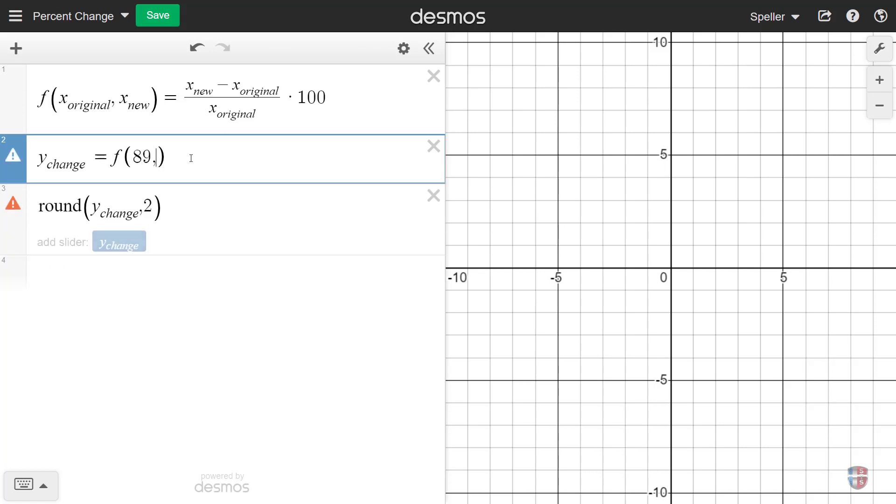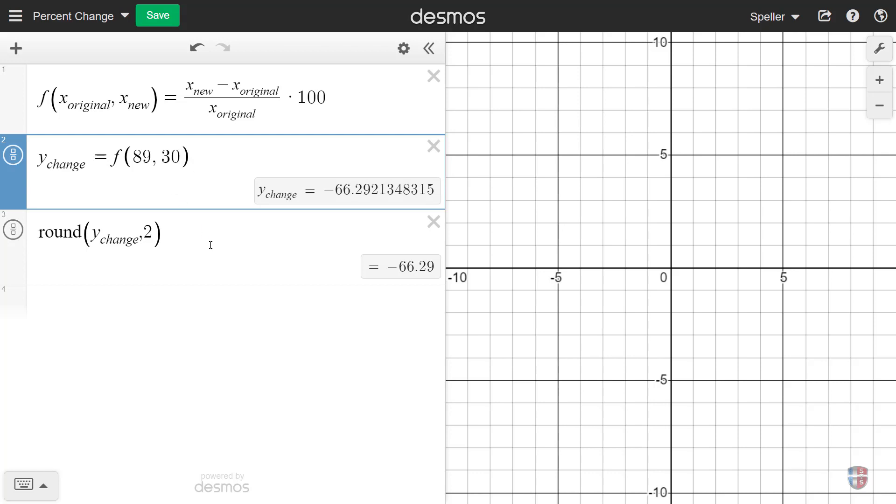What we started with, the original value was 89, the new value was 30, and because we went down or the difference here is negative, we have a negative percentage here showing negative 66.29 percent.